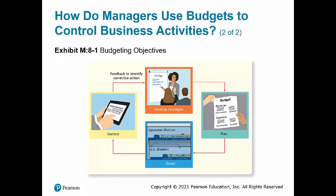This is the diagram we looked at in a previous chapter about how budgets are used to control business activities. The static budget is part of the planning process. Managers will then use that information to direct the operations of the business. The controlling part of the budget process is where the flexible budget comes in, and managers will use the feedback from their performance reports to identify corrective action.